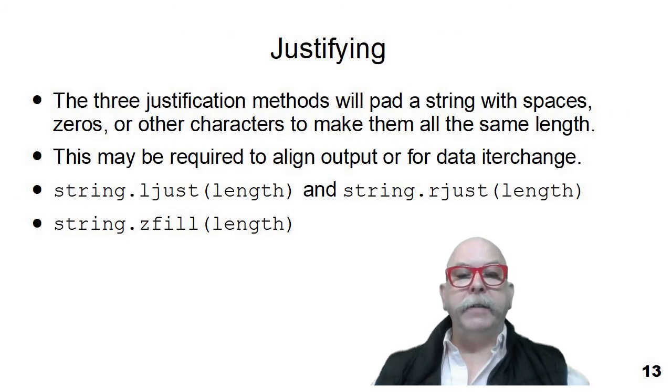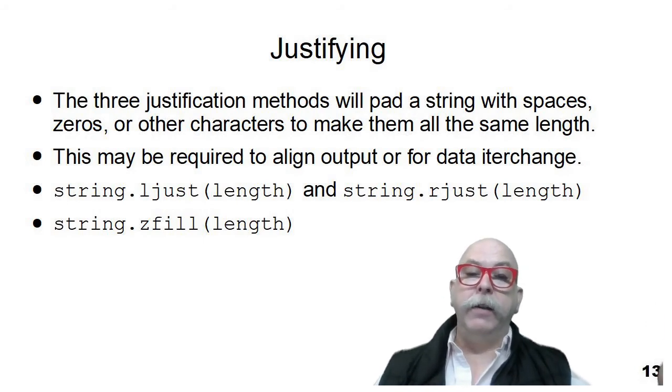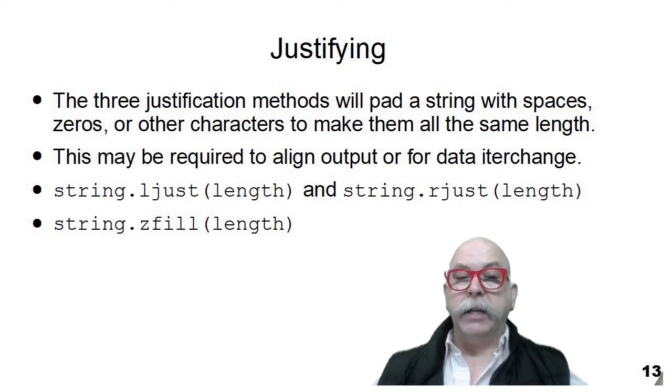The last methods I want to talk about are the ljust and rjust string methods, which will pad a string out to a certain length by adding blanks to either the left end or the right end. Or the third method is zfill, which will zero fill a string on the right. So if you have a number and you want to add zeros on the right end to zero fill it, you can use the zfill method to kind of pad it out.